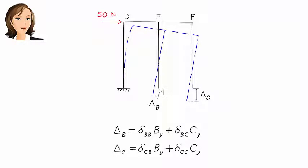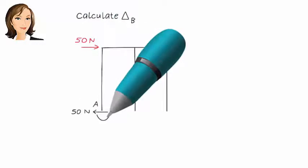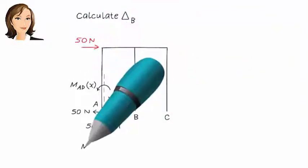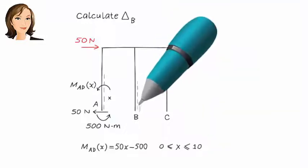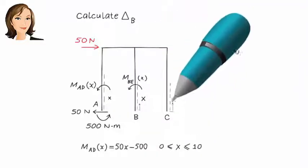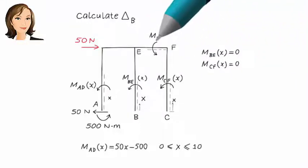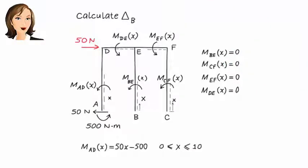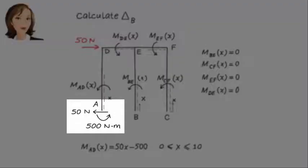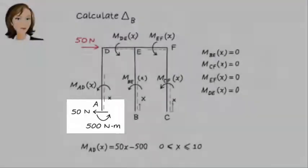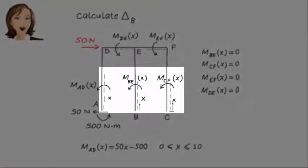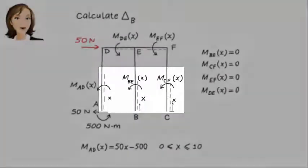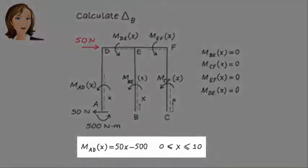Now we need to calculate these displacements. Here is how we calculate delta B. Here we have the support reactions of the statically determinate frame. The dash lines denote the member's bottom fiber. For member AD, the bending moment equation is 50x minus 500.